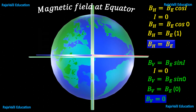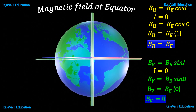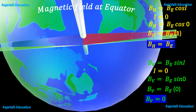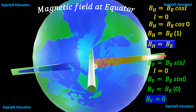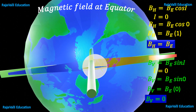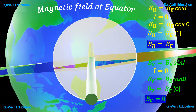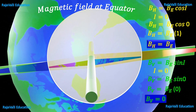So, magnetic field at equator: the horizontal component at equator is maximum and the vertical component at equator becomes 0.